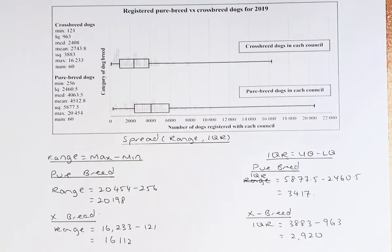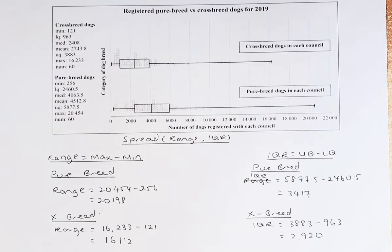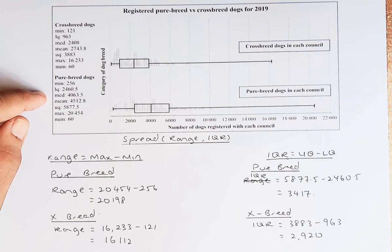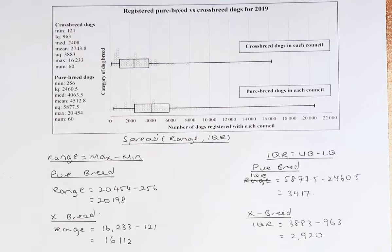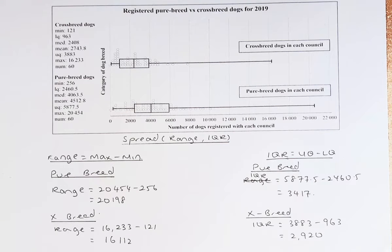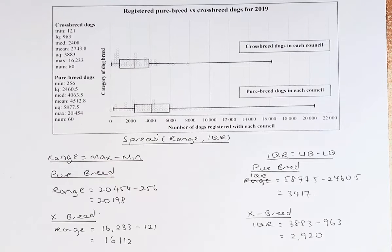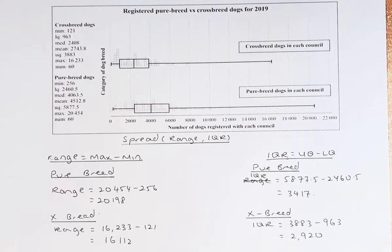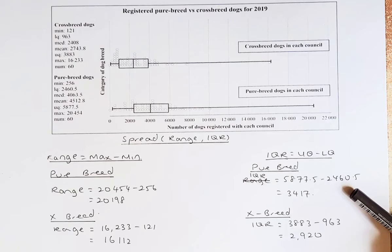For Level 1, interquartile range is more important than range. For purebred, the upper quartile is 5,877.5 and the lower quartile is 2,460.5, giving an interquartile range of 3,417 dogs. For crossbreed, the upper quartile is 3,883 and the lower quartile is 963, giving an interquartile range of 2,920. Again, the purebred has a bigger interquartile range than the crossbreed.